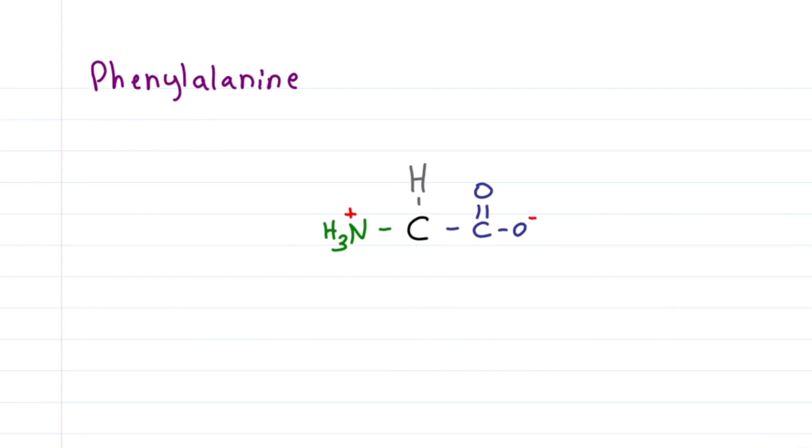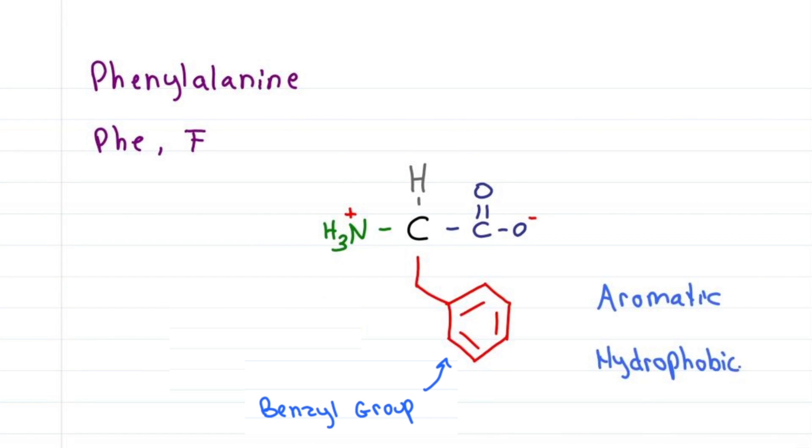Phenylalanine kind of sounds like phenyl on alanine, so we start with alanine, because they all start with CH2, and then add a phenyl. Phenyl and carbon is actually a benzyl group. The first three letters are P-H-E, but the P is already taken by another amino acid, so we sound it out. P-H-E, PHE, sounds like an F, giving me F as the abbreviation. The benzene ring makes it aromatic and hydrophobic.